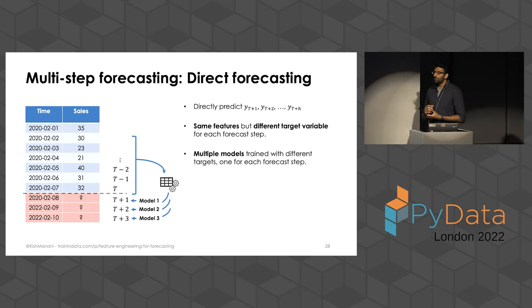Question: Have you ever considered doing instrument-free inference for forecasting the independent variables — using something like an instrumental variable approach, a two-stage least-squares regression, or setting parameters on a confidence interval and taking the average? Answer: I'm not going to pretend like I've fully understood the question, but maybe we can catch up afterwards.